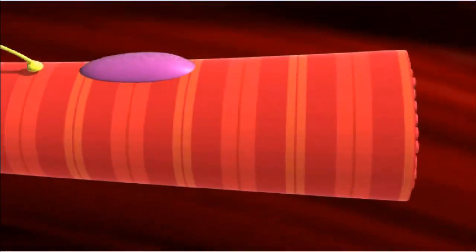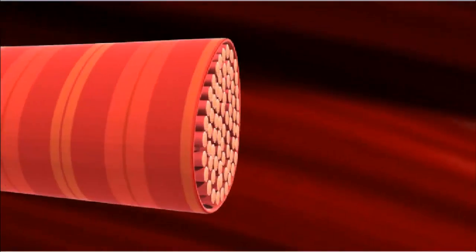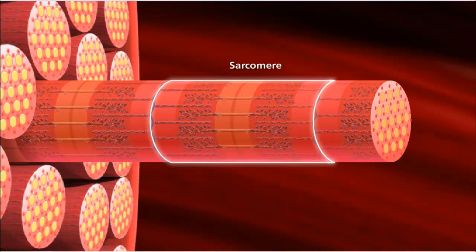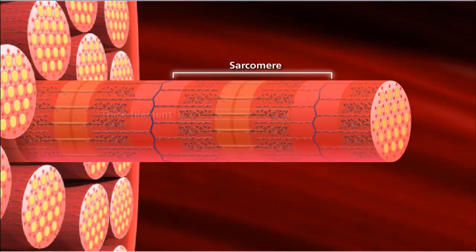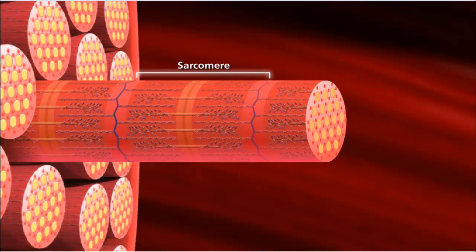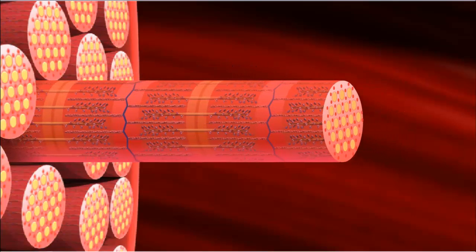Muscle fibers are composed of many myofibrils. A myofibril contains contractile units called sarcomeres, which run adjacent to one another down the length of the myofibril. Each sarcomere consists of alternating thick and thin protein filaments, giving skeletal muscle its striated appearance. The muscle contracts when these filaments slide past each other.